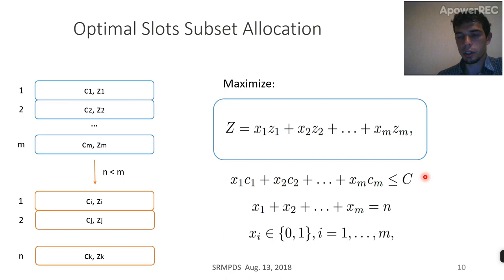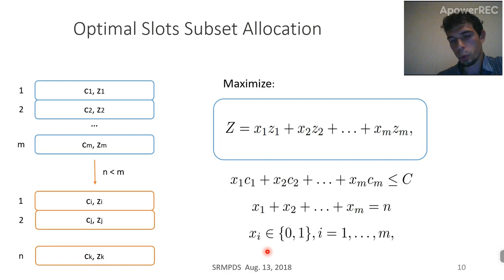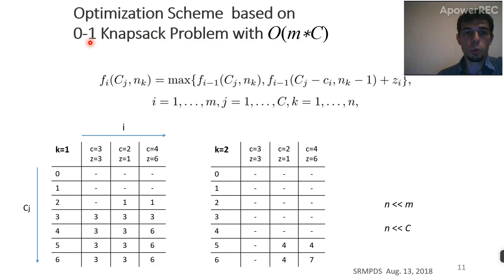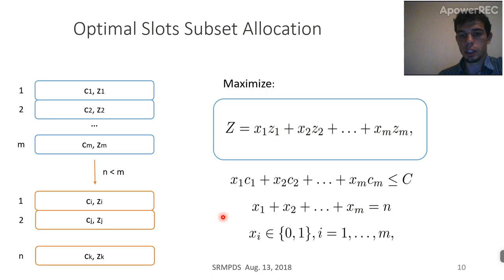There is a restriction on the number of slots N we need in our window, and each variable X defines if each slot is allocated to the user window or not — it is 1 or 0. This task is really similar to the 0-1 knapsack problem, but with one additional restriction: we need exactly N slots — not less, not more — which maximizes criterion Z, with total costs less than C_max.